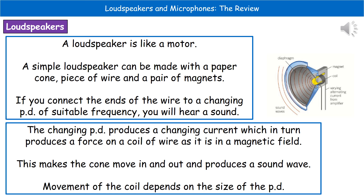The movement of the coil depends on the size of the potential difference, and that is why we can get those different sounds coming out of our loudspeaker.